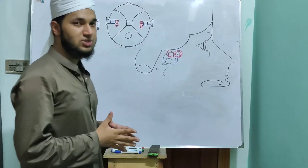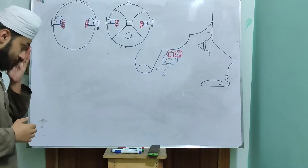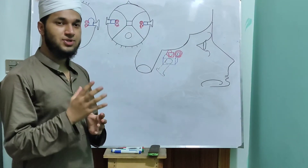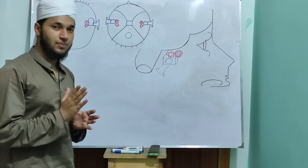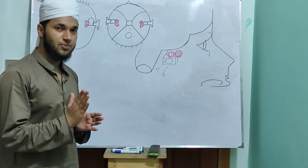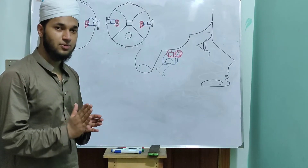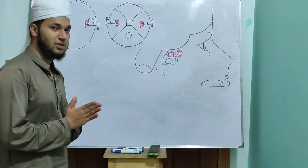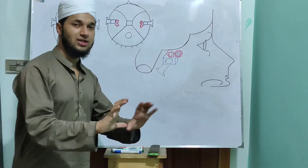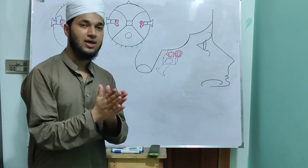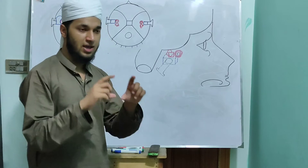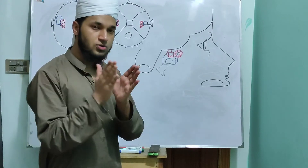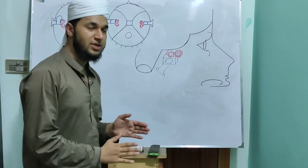Now we have to study the internal ear. Like the middle ear, it is situated in the petrous part of the temporal bone. The internal ear is also located in the petrous part of the temporal bone. It is exactly the same way the middle ear is, but the difference is that it is medial to the middle ear. The middle ear is laterally located and the internal ear is medially located.